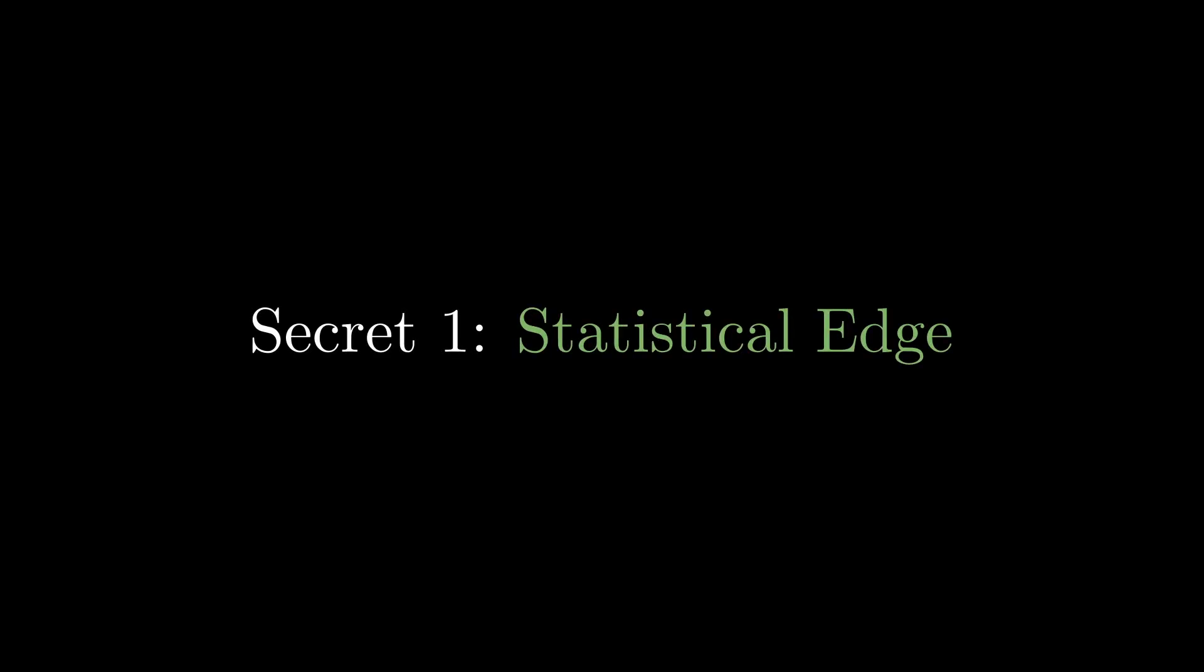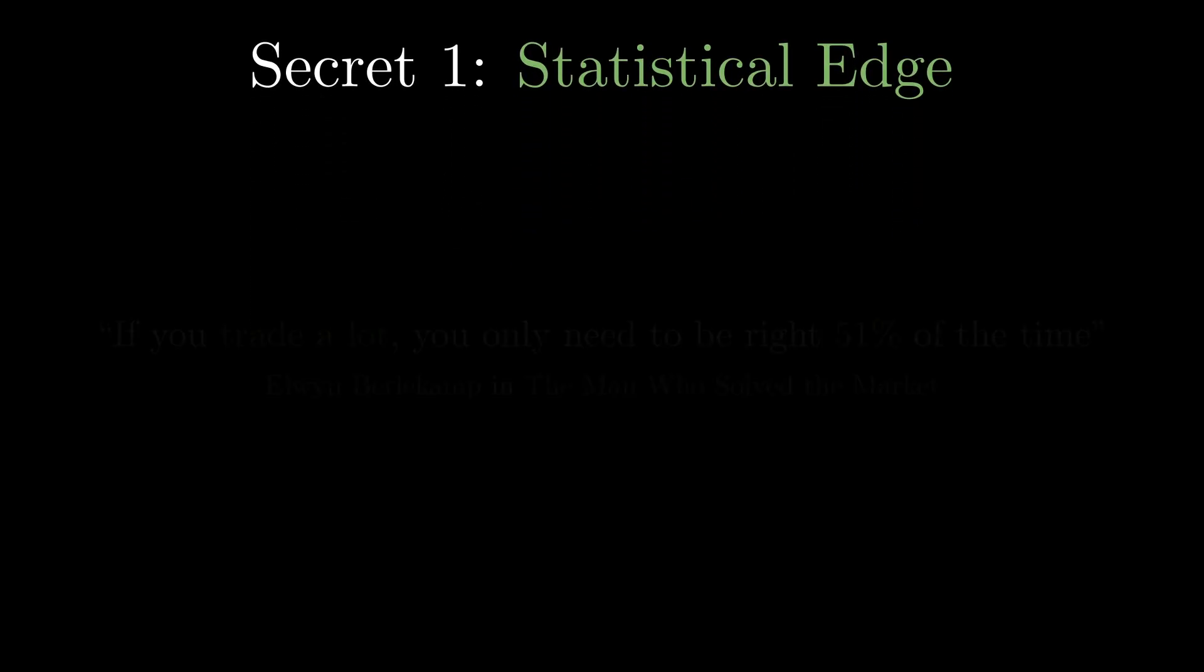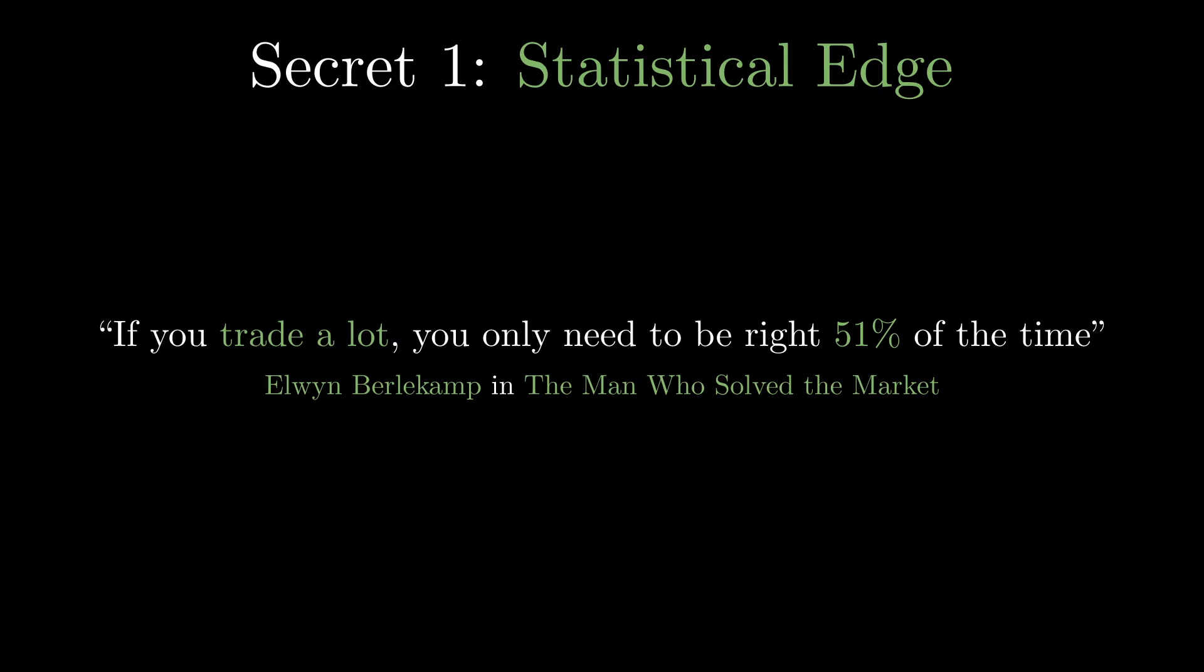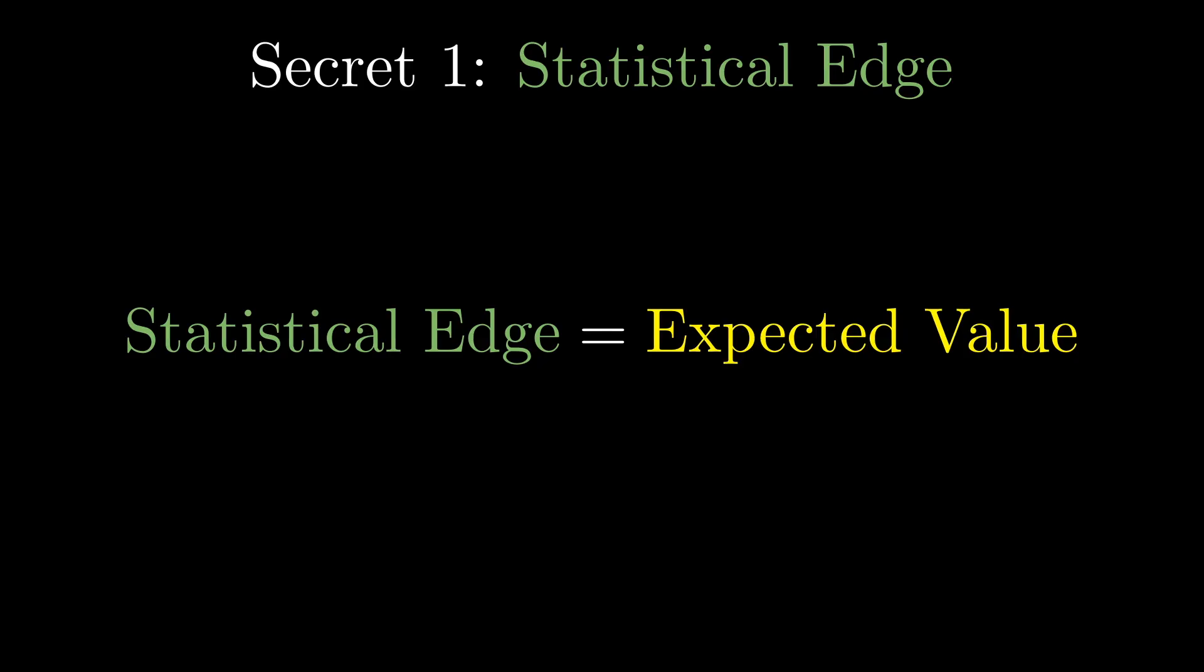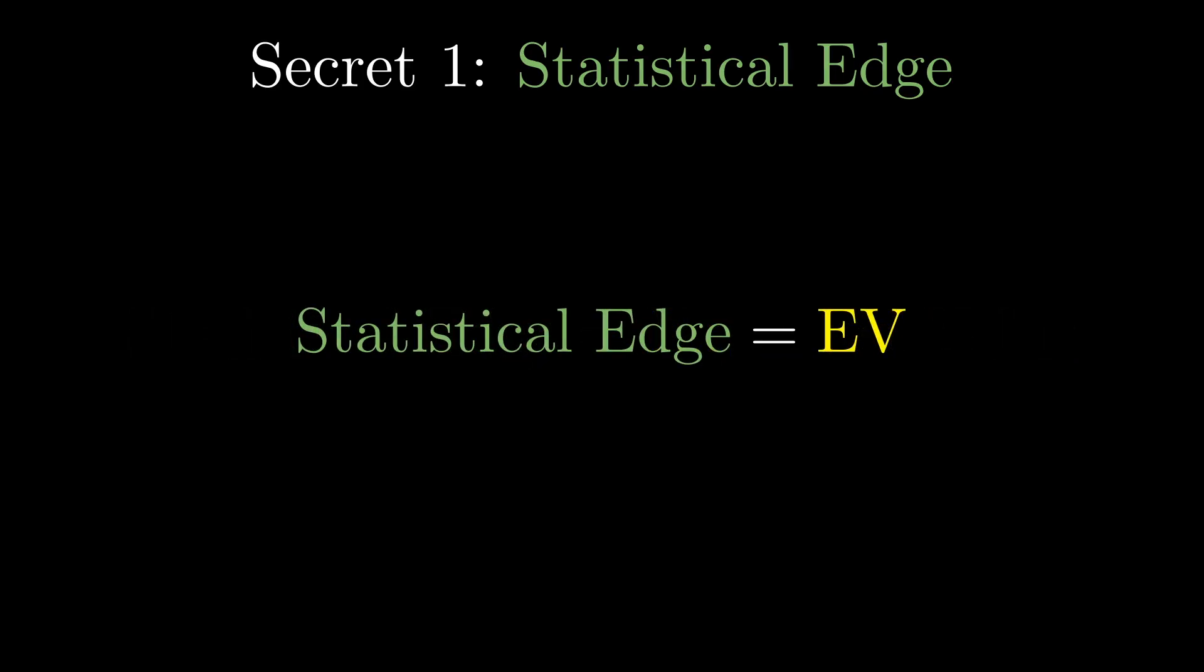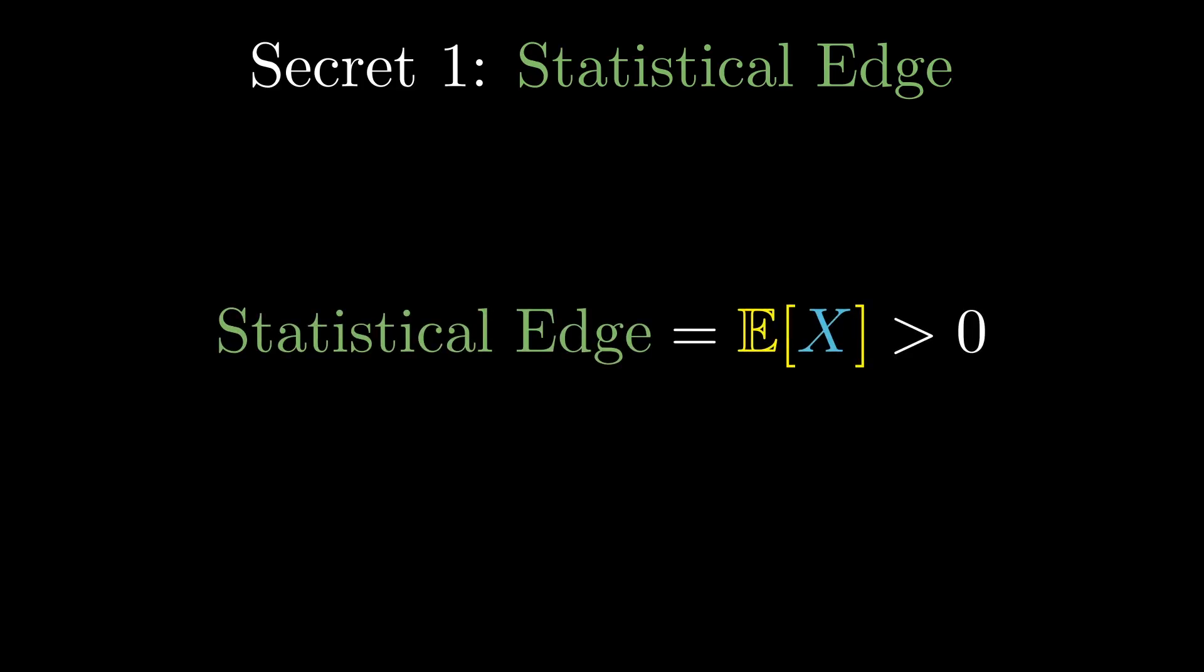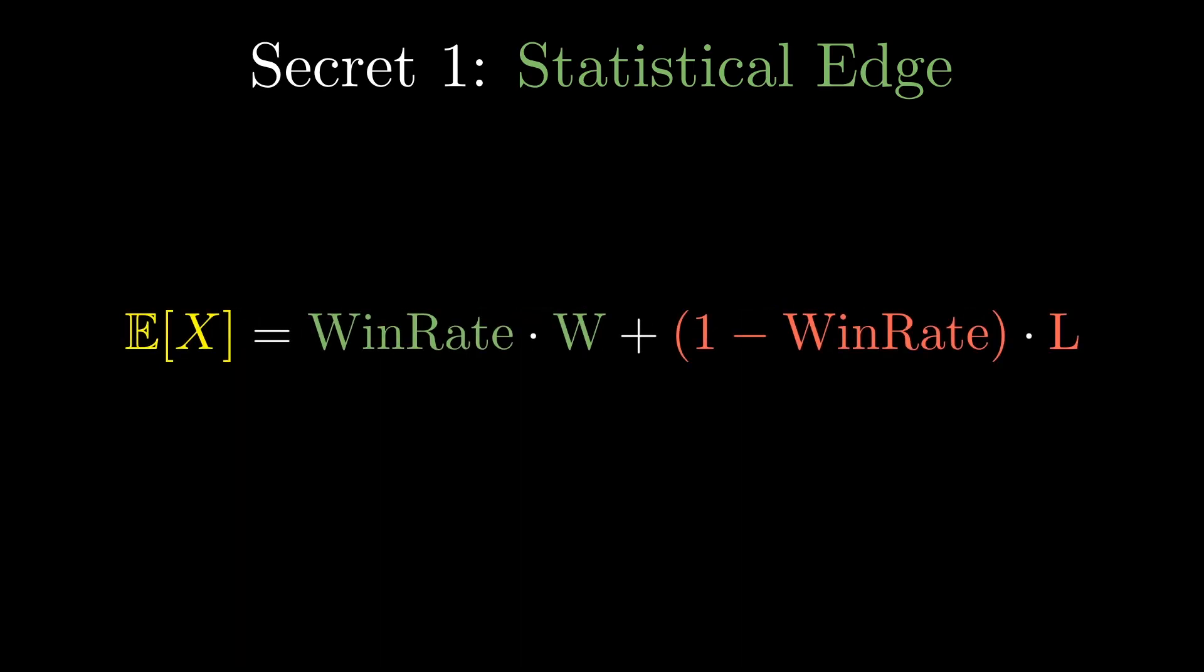The first secret is their statistical edge. The book says they only need to win 51% of the time. Their secret? A tiny edge repeated thousands of times compounding into massive returns. Let's dive deeper. In statistics, this is called expected value or EV. It's simply the average result of your wins and losses combined. An edge exists when EV is greater than zero. Here's an example.